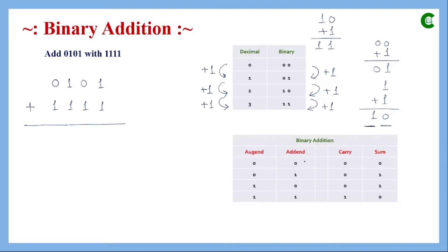Now we look at the rules of binary addition in a table. When 0 is added with 0, the sum is 0 and carry is 0. When 0 is added with 1, the sum is 1 and there is no carry. When 1 is added with 0, it again generates sum 1 with no carry. The important case is when 1 is added with 1: the sum position gives 0 and the carry position gives 1.